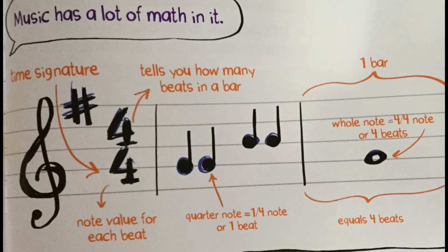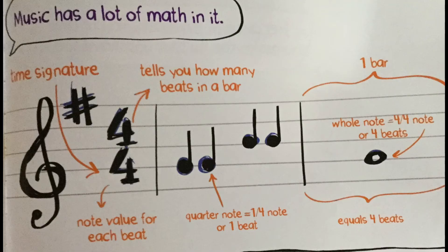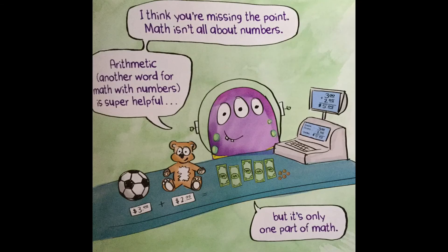The space between the two up and down lines is one bar. So a quarter note is one fourth of a note. And to the right of that, you can see a whole note, which equals the whole bar or four fourth notes or four beats. Because of his math, you're able to make the guitars you have today. Well, thanks for ruining music for me. Now all I hear are numbers.